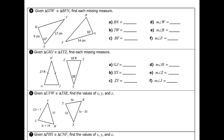Let's take a look at problem number four. We have a congruence statement that tells us what corresponds with what. From this statement I can mark that angle S is congruent to angle B. Since they're both congruent and angle S is 67 degrees, I know that angle B is also 67 degrees.